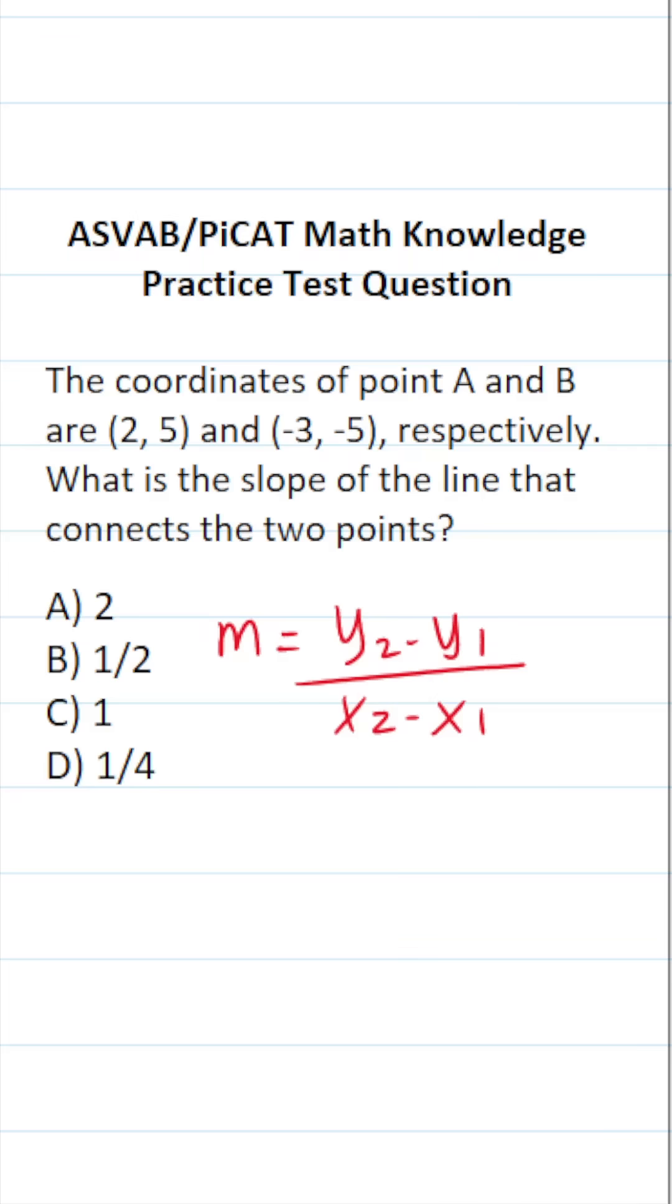Now, you might be saying to yourself, especially if you haven't done this math in a long time, what is M? Well, M refers to slope. And what is X1, Y1, X2, Y2? Well, those are the values in your ordered pairs. So this is X1, Y1. This is X2, Y2. So with that in mind,